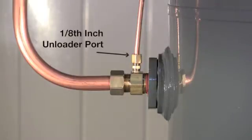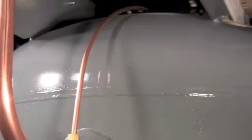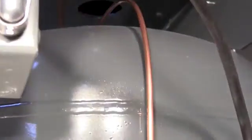There is also a one-eighth inch unloader port located on the top side of the check valve, which simultaneously leads compressed air to the pressure switch through the copper unloader line.